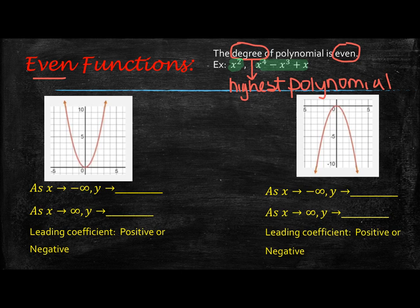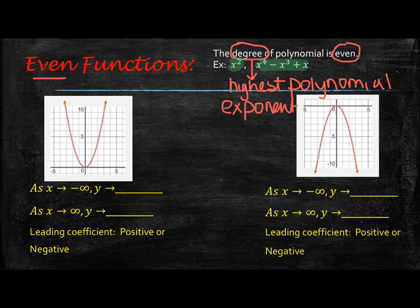I just realized that I wrote 'highest polynomial' — that should be 'highest exponent in the polynomial.' So let's look at this first graph. We have a quadratic that is opening up, and so as x approaches negative infinity — looking at the left side of the graph — the left side is going up, so we're going to say that y is approaching positive infinity.